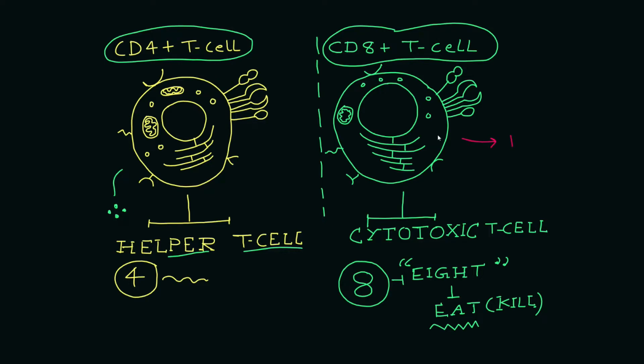There is no functional relationship between 8 and eat - it's just to remember that 8 resembles 'eat' which can be a kill signal. This is how you can differentiate between these two cell types.